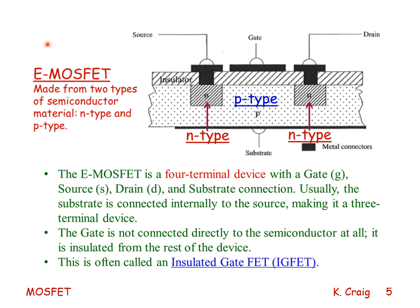Here is another diagram of the N-channel E MOSFET. It's made from two types of semiconductor material: the N-type in the source, the N-type in the drain, and the P-type in the substrate. We see the gate that's insulated from the semiconductor material, and normally the substrate is connected internally to the source. The E MOSFET is a four-terminal device with a gate, a source, a drain, and the substrate connection.